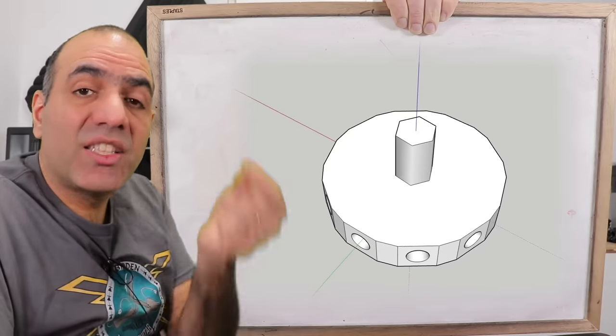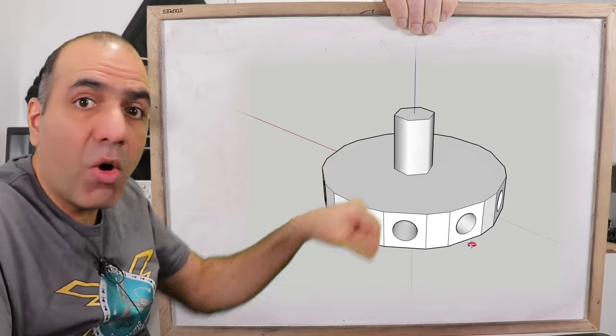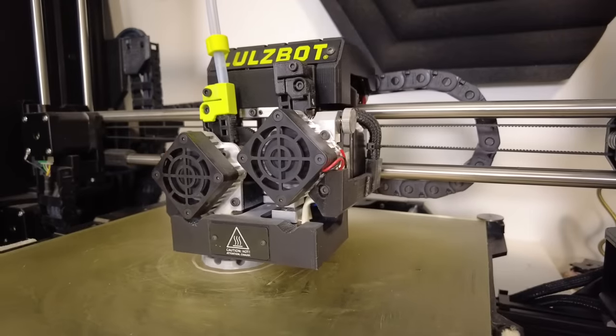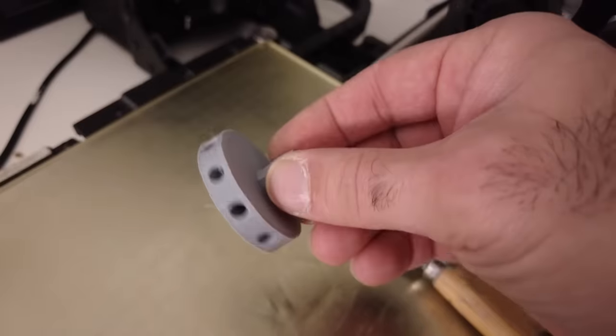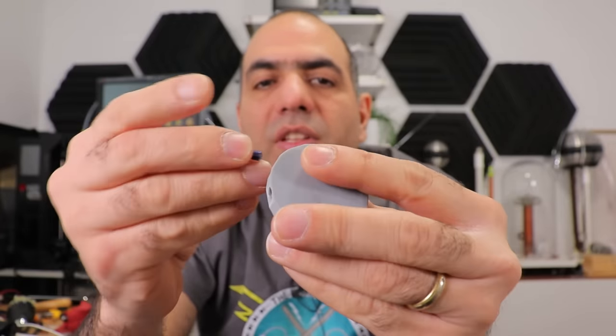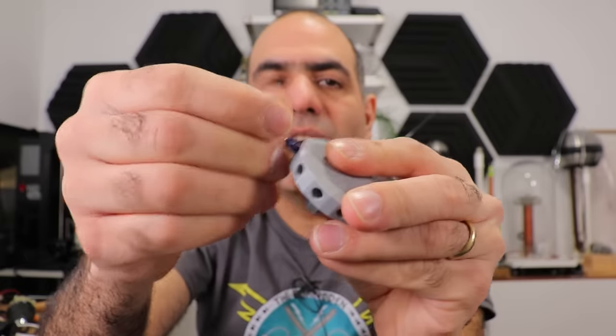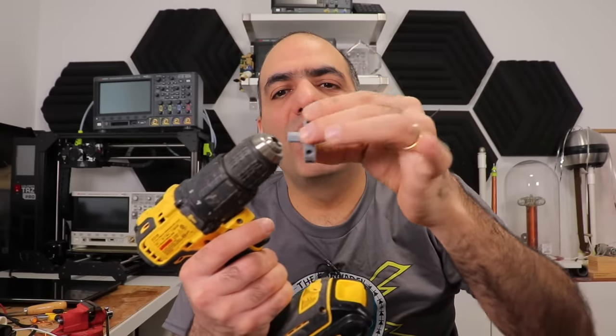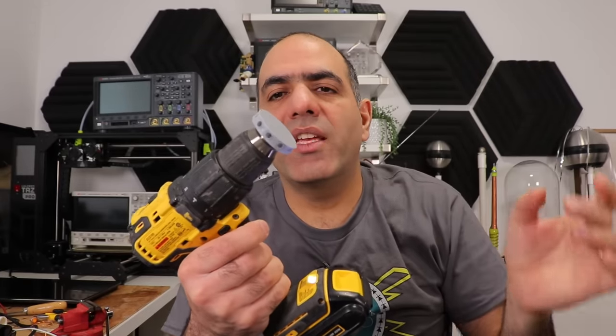I designed this 3D model that 10 capacitors can fit in the holes around it and it will turn with a motor. Then we print it. Here we are. Now I can easily fit a capacitor in the holes around it and rotate it. And it is designed to go on a drill so we can easily turn it.